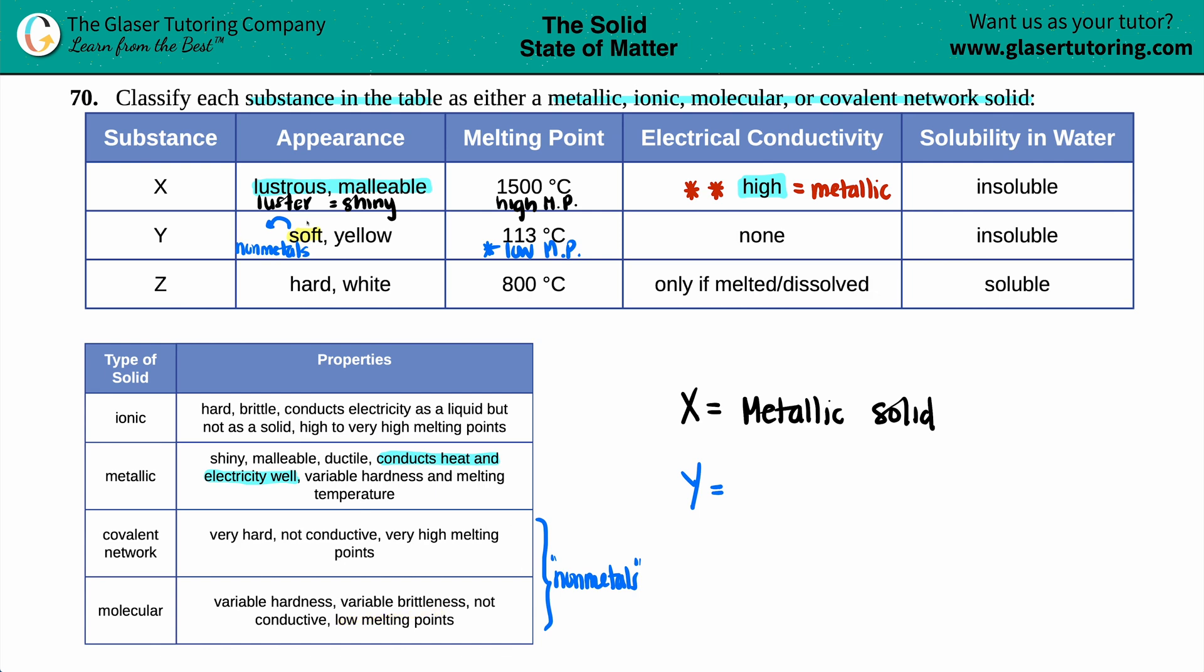Whereas molecular ones have very low melting points. So we were able to bring it down to two of them by just saying that it's soft, right? And that just means not hard. So another reason why it's not a covalent network is because covalent networks are very, very, very hard. So it's got to be molecular. So in this case, we know that Y is going to be a molecular solid.